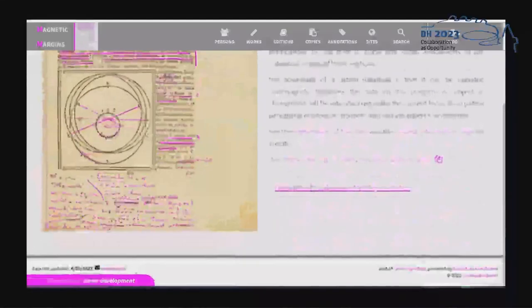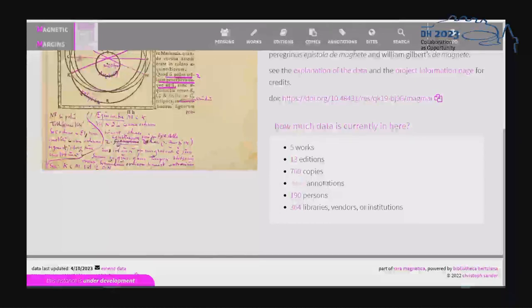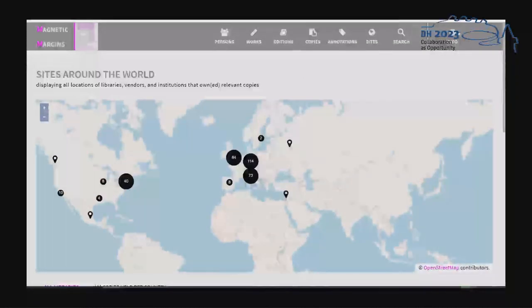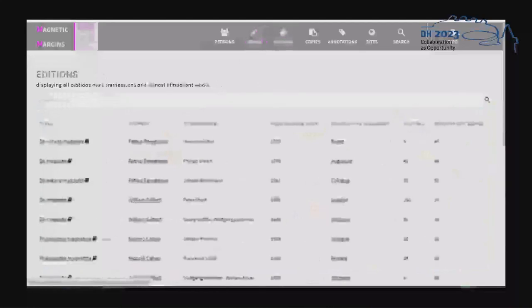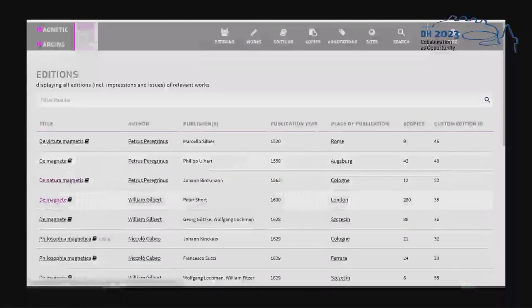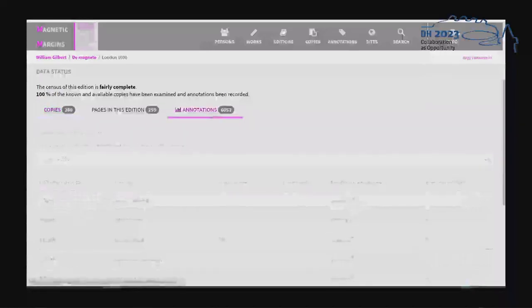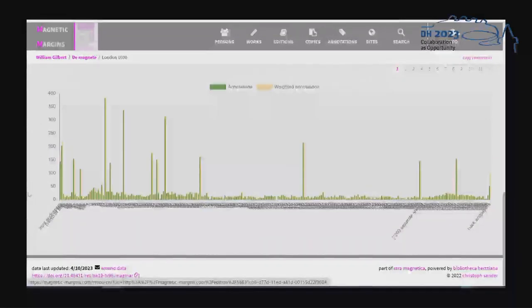On this website, you can check out how much data there is. You can see that we have almost 10,000 annotations currently. You can check out where on a map these individual copies are currently located. You can zoom in and see where the libraries and sites are. You can also check out individual editions, where the copies of these editions are, and what annotations in all the copies of these editions are, and on which pages they occur the most.